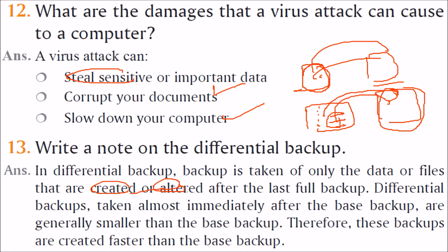Only those modified files are backed up. Differential backups are taken almost immediately after the base full backup and are generally smaller than the base backup, which is why they are created faster.